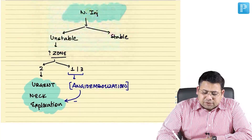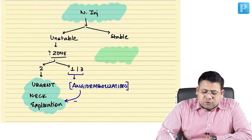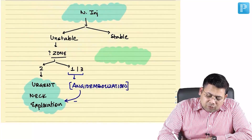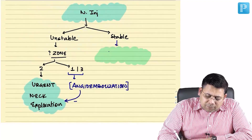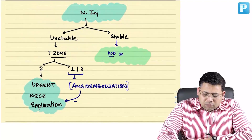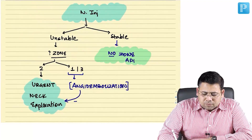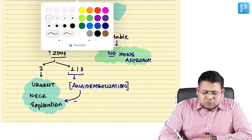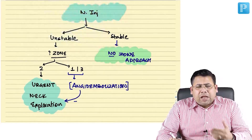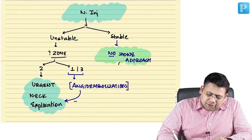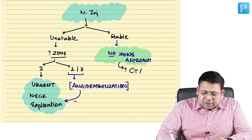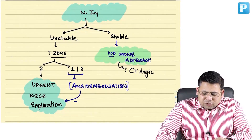If it is a stable patient, you follow a no-zone approach — a very famous concept. In the no-zone approach you do not give priority to any zone. Instead, you go for CT scan and add angiography — CT angiography — to enhance evaluation of vascular structures.